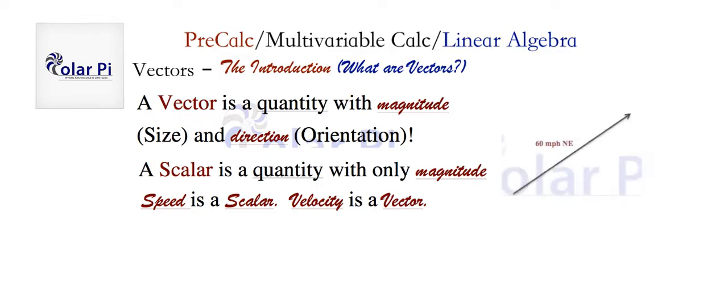Visually, we can represent, for example, 60 miles per hour northeast in this way. If the length of this black vector represents 60 miles per hour, then the maroon vector, which is half the length of the black vector, represents 30 miles per hour. In the case of the maroon vector, it's 30 miles per hour west.